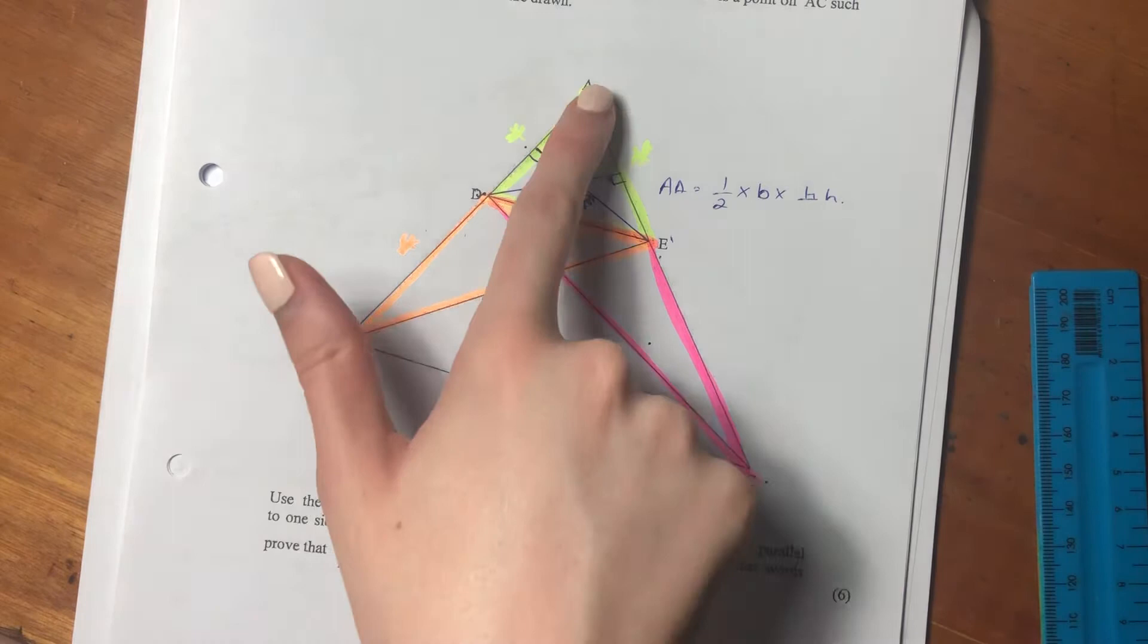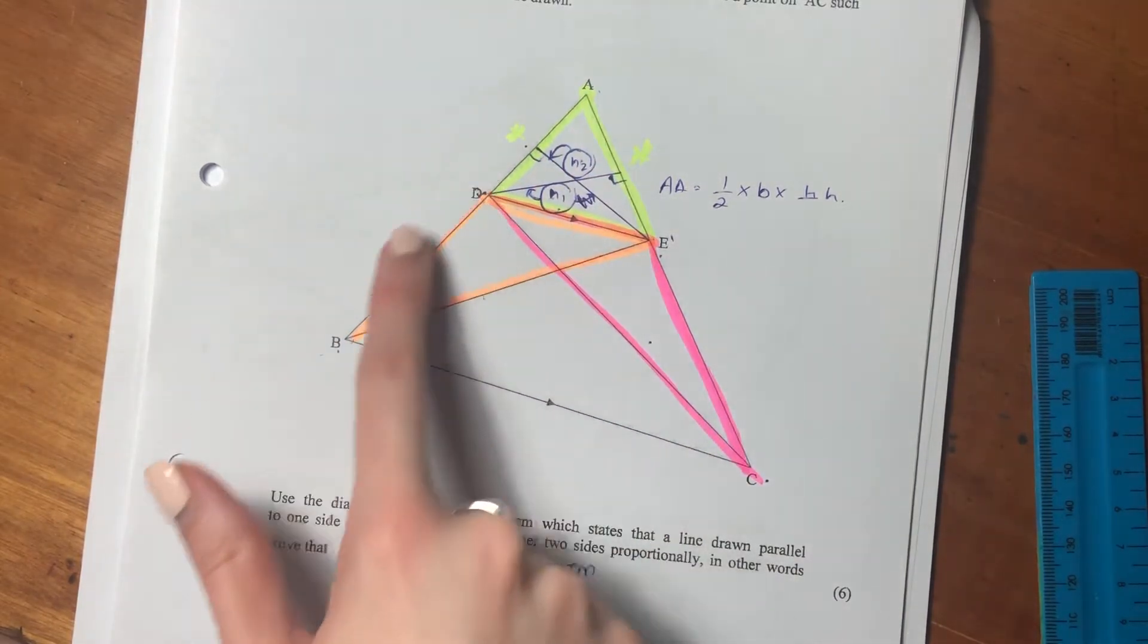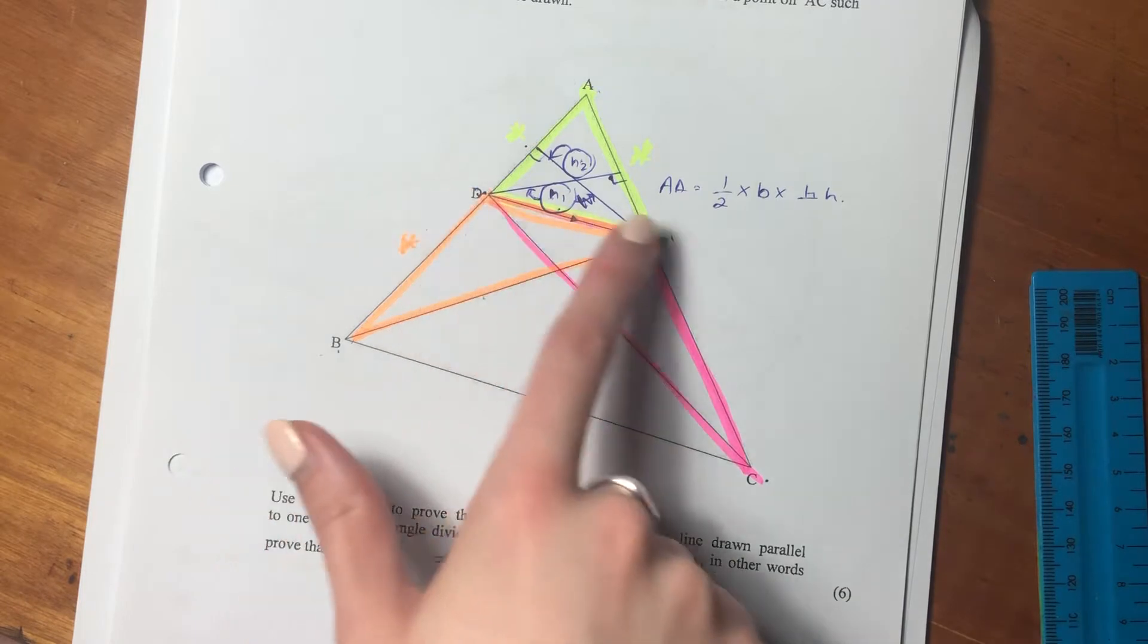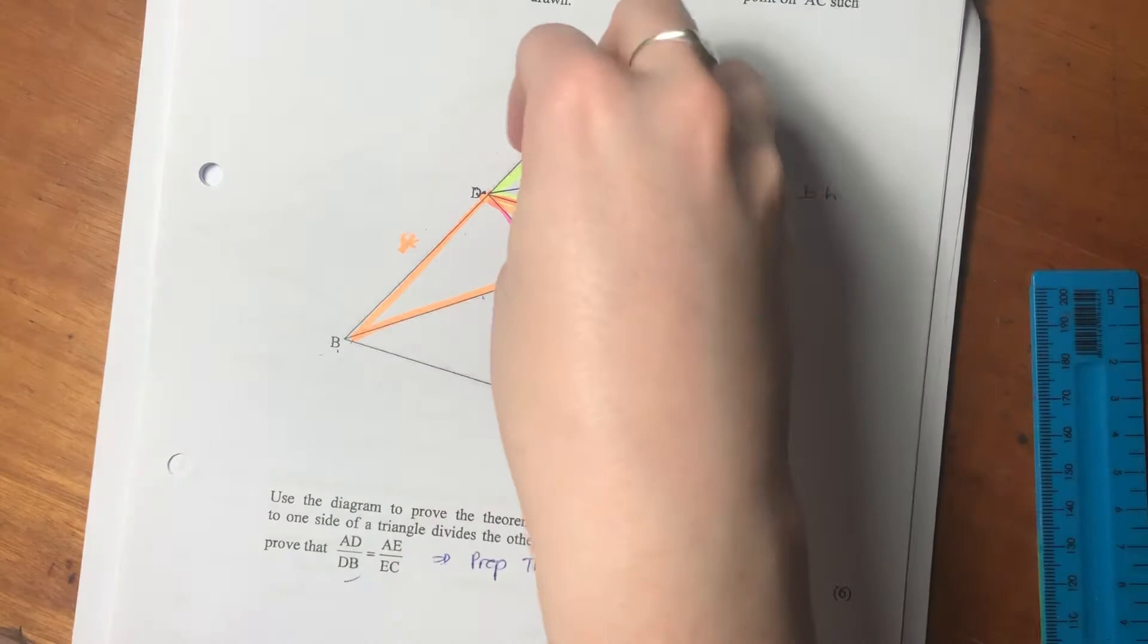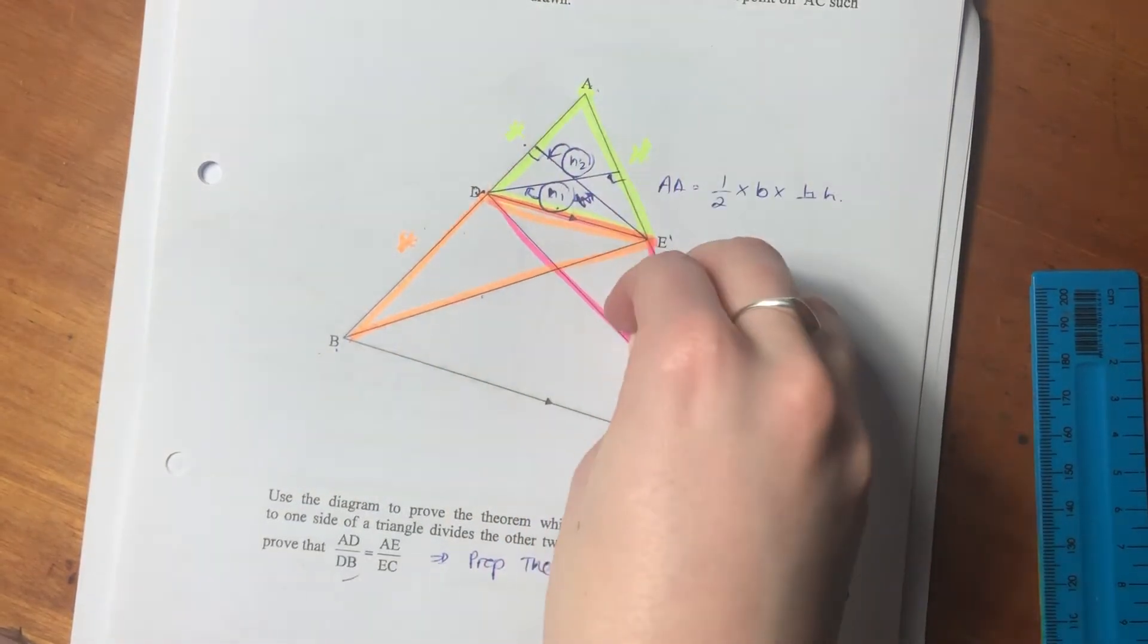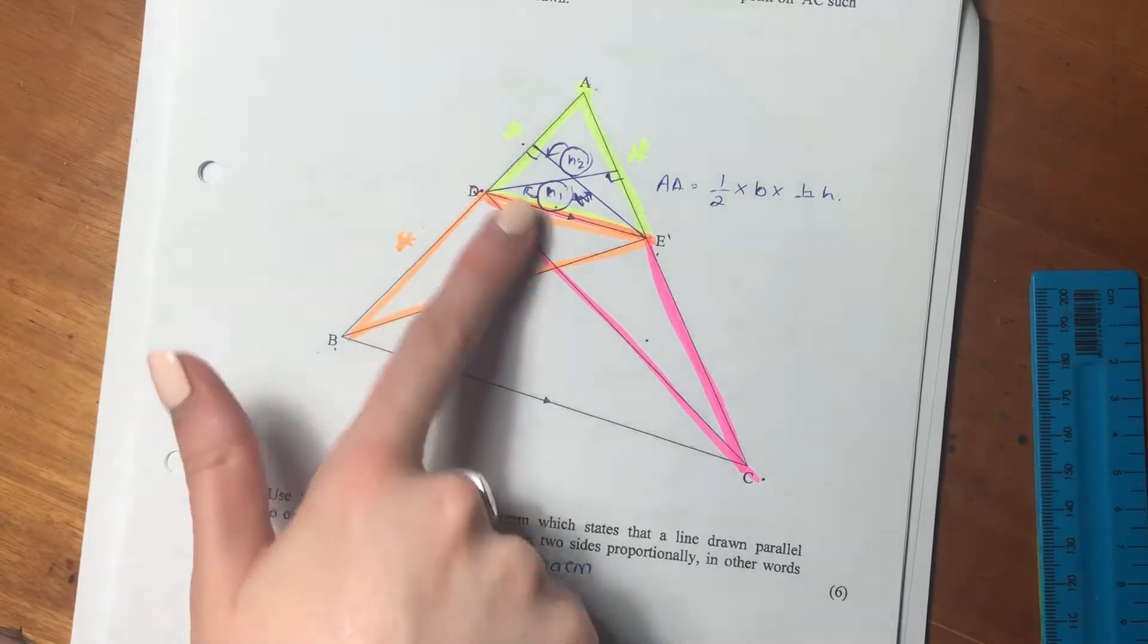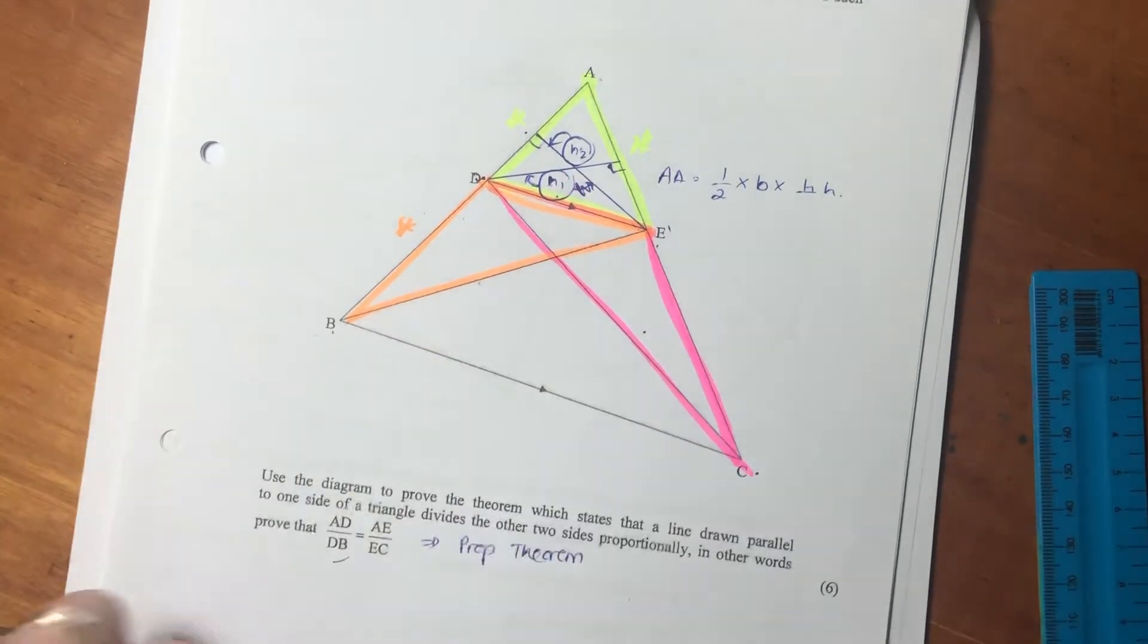What we're going to do is we're going to say, if we can prove that the area of ADE over the area of DBE is in the same ratio as the area of ADE to DEC, then we can say the proportionality theorem works, because we're saying that area over that equals that area over that. Which means that it's proportional, because we can see that this orange triangle is sitting on the opposite side of the pink triangle. So if we can prove that ratio, we've proved the proportionality theorem.